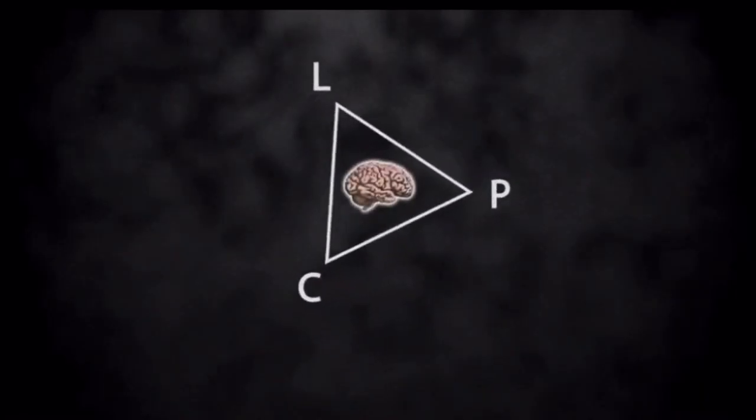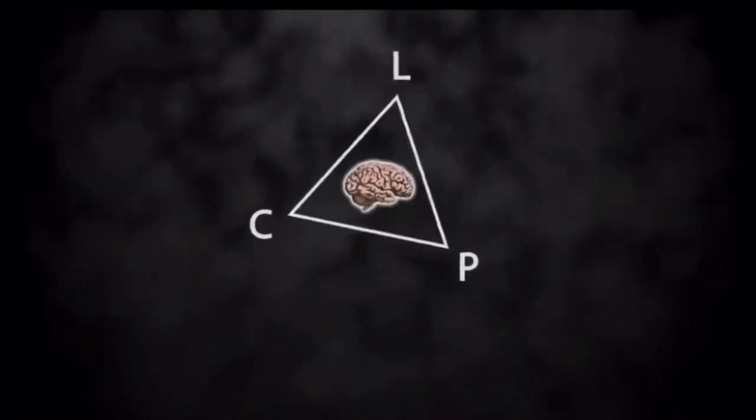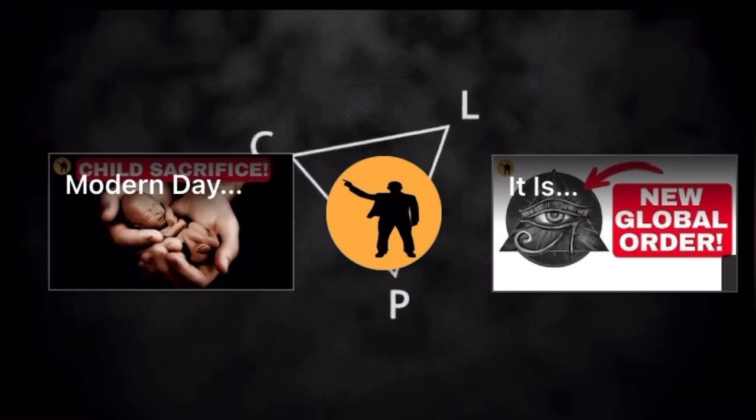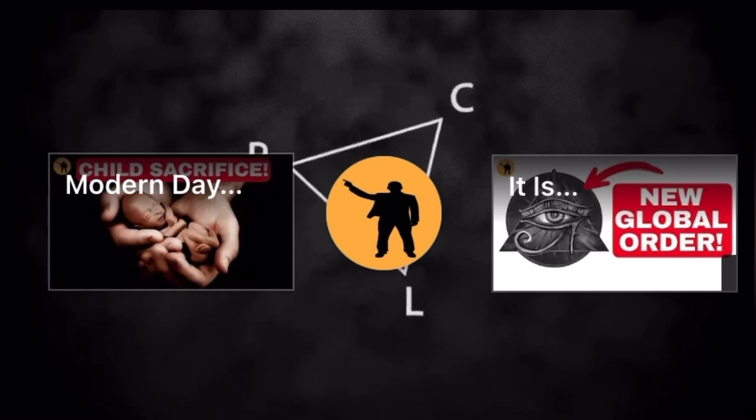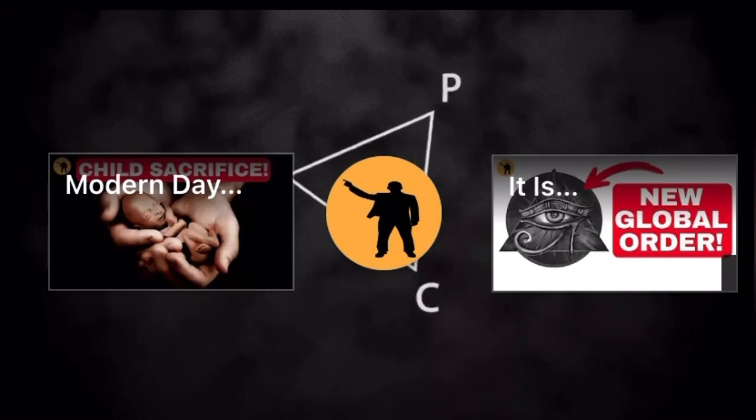This outlines the cognition-language-perspective triad. Cognition determines our use of language just as language shapes our cognition. Cognition determines our interpretation of perspective while perspective determines the orientation of our cognition. Language conveys a sense of perspective just as perspective determines the way we think about language.